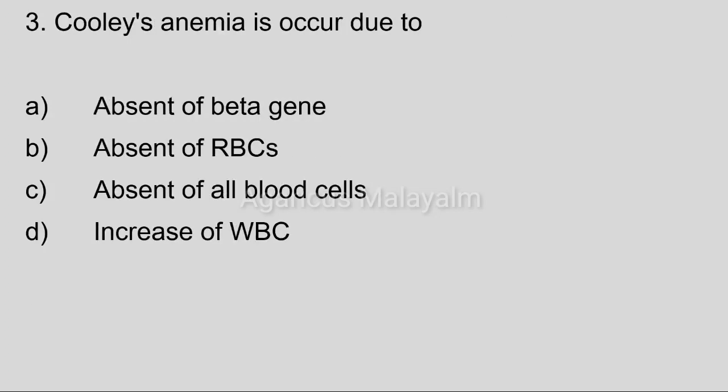Third question: Cooley's anemia is occurred due to? Option A: absent of beta gene. Option B: absent of RBCs. Option C: absent of all blood cells. Option D: increase of WBC.